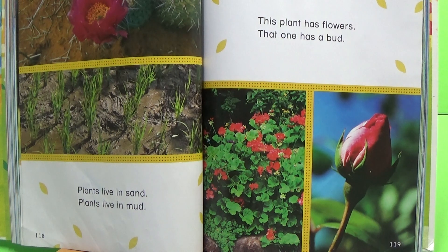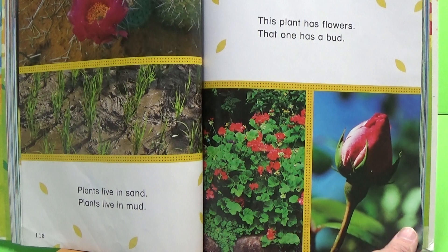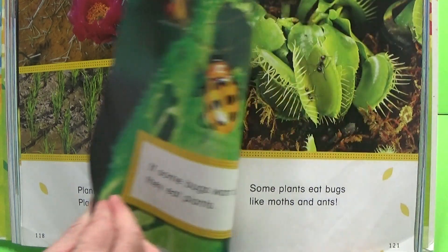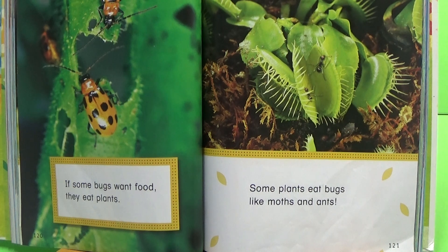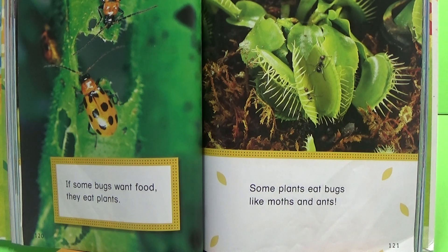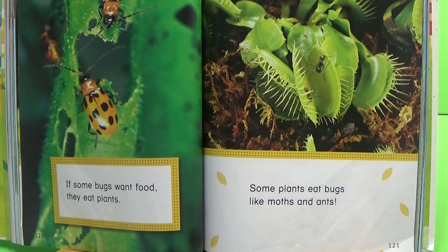If some bugs want food, they eat plants. Some plants eat bugs like moths and ants.